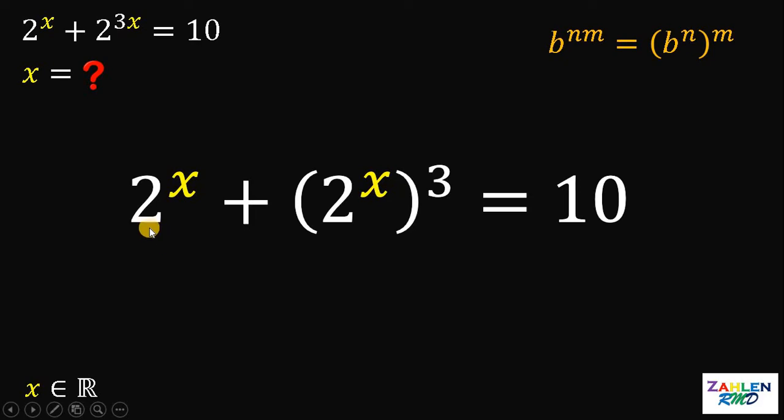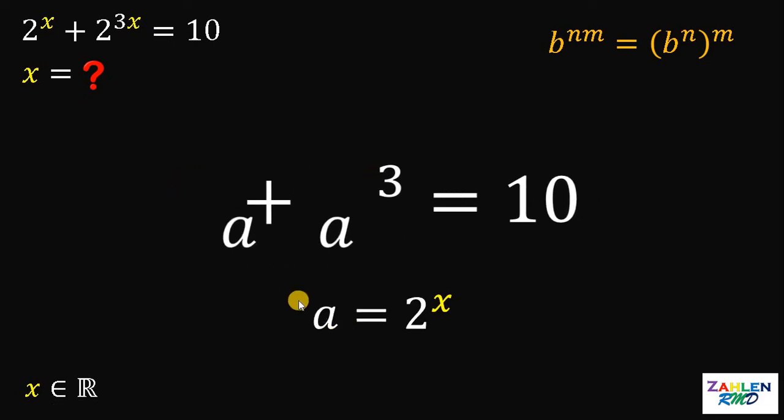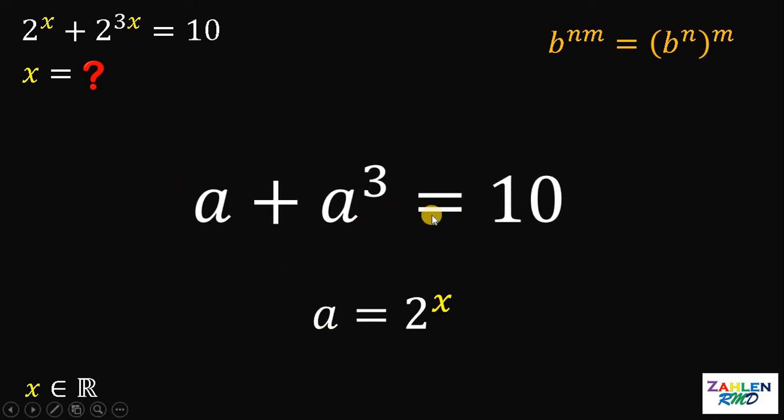Notice that we have a common term of 2 raised to x. So, it's safe to replace this one by another variable and let's call this a. We need to replace all 2 raised to x with a. This will give us a plus a cubed equals 10.